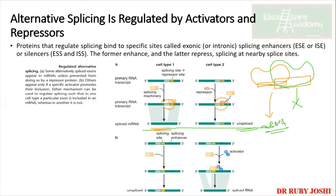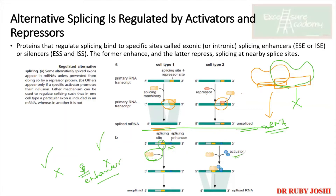Simple rule: repressor present → no splicing → unspliced mRNA. In the second scenario, if you have enhancers/activators but the spliceosome requires them to proceed, without enhancers the splicing machinery cannot proceed. The spliceosome needs the activator in order to splice. With enhancers → spliced RNA; with repressor → unspliced RNA.